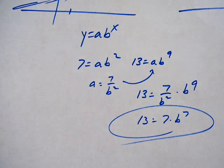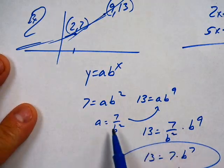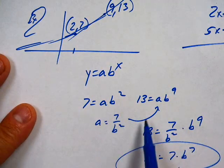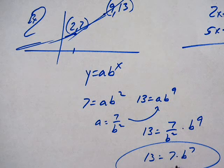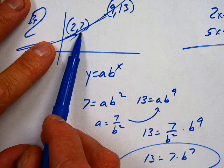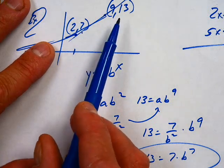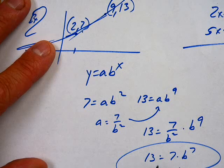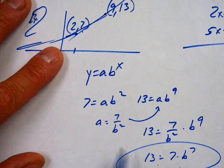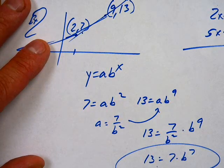And then we end up exactly the same spot as we started. We're starting at a result of 7 and then we're going to multiply by something so many times to get up to 13. How many times am I going to multiply by something? From 2 to 9, 7 times.